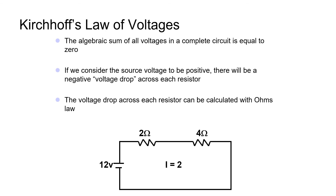If we consider the source voltage to be positive, there will be a negative voltage drop across each resistor. The voltage drop across each resistor can be calculated with Ohm's Law. With 2 amps of current flowing through a 4-ohm resistor, 2 amps times 4 ohms equals 8 volts that drop across that resistor. Similarly, 2 amps through a 2-ohm resistor yields 4 volts dropped. We have 8 volts plus 4 volts equaling 12 volts dropped throughout this circuit powered by a 12-volt battery, confirming Kirchhoff's Law.